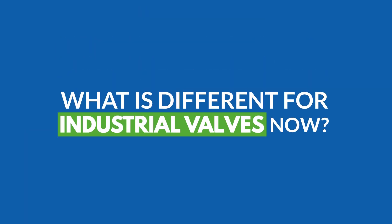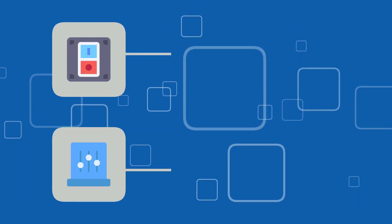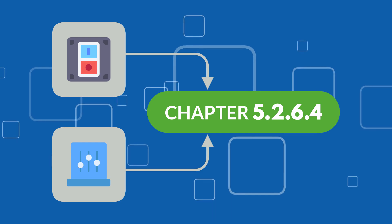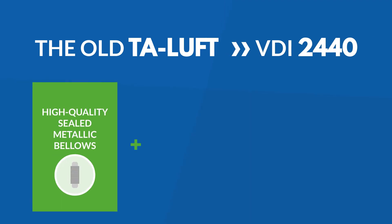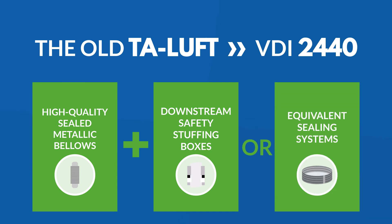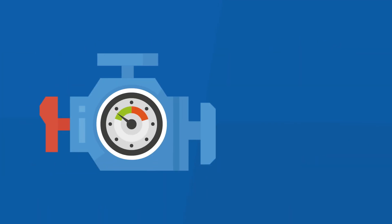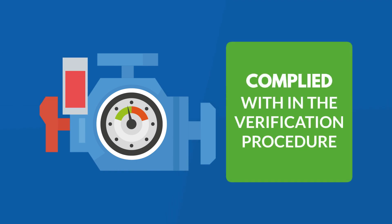So what is different for industrial valves now? The core changes are for shutoff and control elements as highlighted in Chapter 5.2.6.4. With the old TA Luft in accordance with VDI 2440, only high-quality sealed metallic bellows with downstream safety stuffing boxes or equivalent sealing systems could be used. In addition, sealing systems were regarded as equivalent if the temperature-specific leakage rates were compiled within the verification procedure.